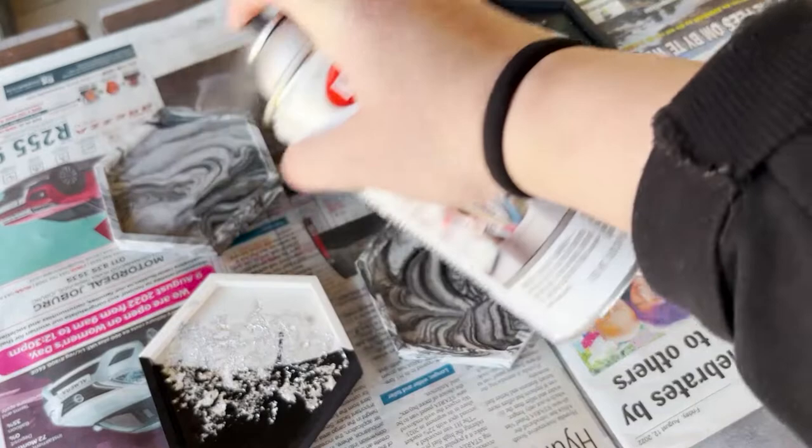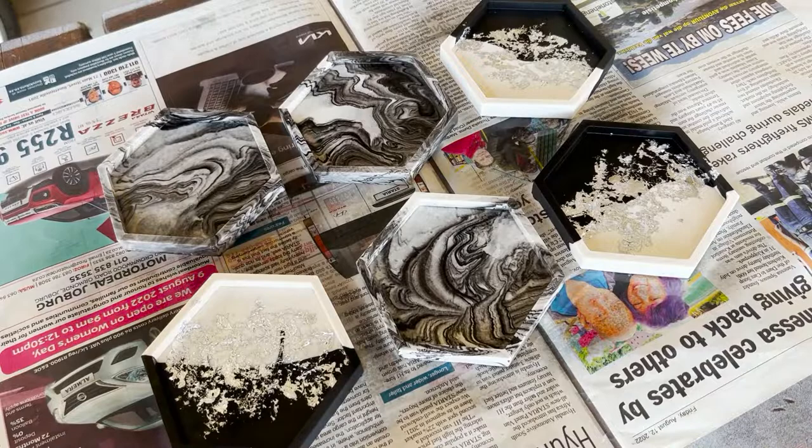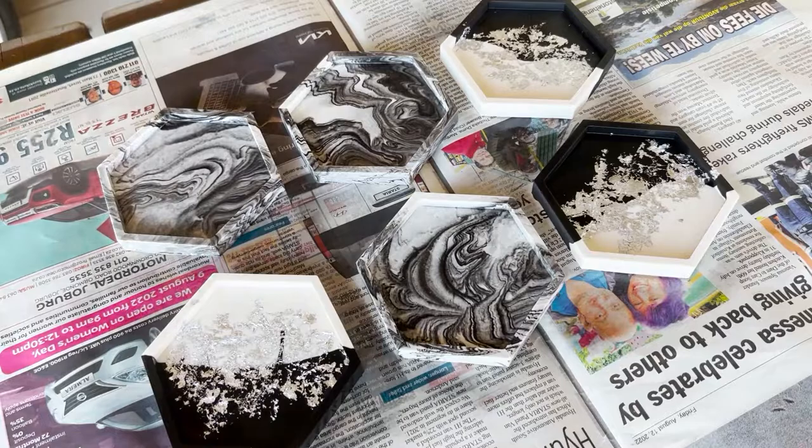So this is how I seal my coasters. You also get acrylic sealer specifically made for jesmonite, but I really don't like to use that because it leaves a whole bunch of streaks and I'm just not a fan of that. I just like to use the spray varnishes which I find work a lot better.